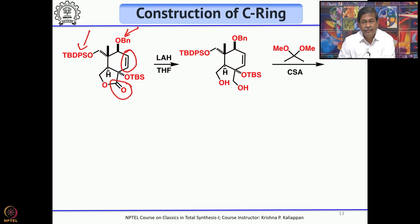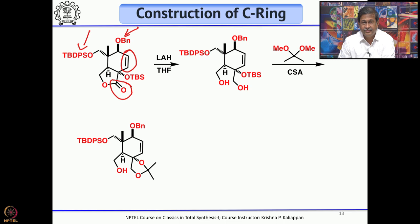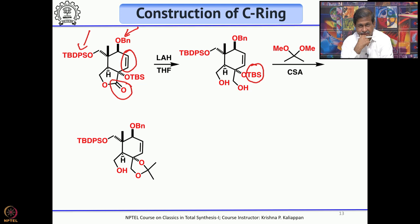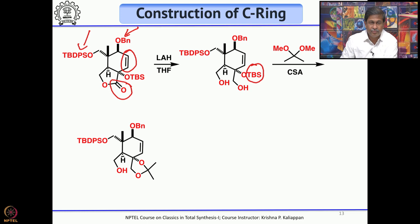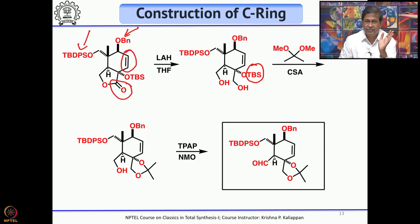LiAlH₄ reduces the 5-membered lactone to a diol. Treatment with dimethoxypropane and camphorsulfonic acid removes the TBS group and protects the 1,2-diol as an acetonide — in the presence of a 1,3-diol, the 1,2-diol is always protected faster when using acetone or a ketone. This leaves the primary alcohol free. Oxidation of the primary alcohol gives the C-ring fragment.